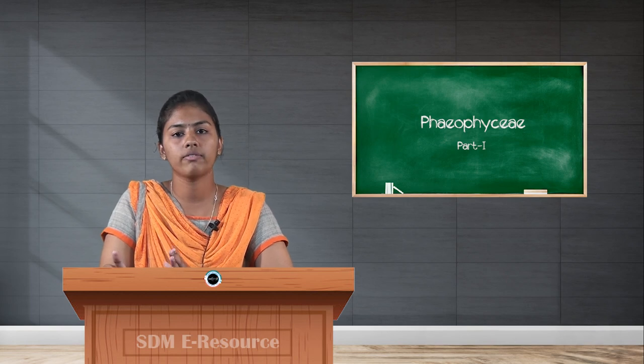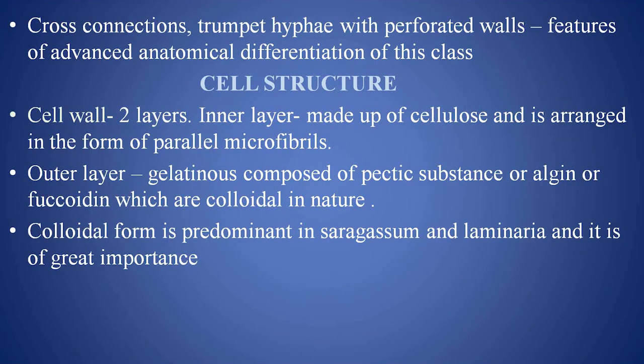The cell wall of Phaeophyceae cells is made up of two layers. The outer layer is made up of cellulose arranged in the form of parallel microfibrils. The outer region is gelatinous and composed of pectic substances or algin or fucoidin, which is colloidal in nature and is of great importance.